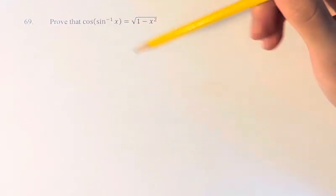Hello, and welcome back to another video. This problem, we're asked to prove that cosine of the inverse sine of x is equal to the square root of 1 minus x squared.